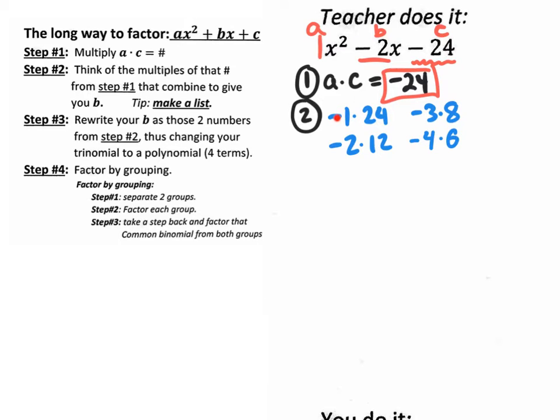Let's see, if I combine negative 1 and 24, that gives me a 23. Obviously, the b value is not 23. Negative 2 plus 12 is 10. That's obviously not 10. Negative 3 plus 8 is 5. The b value is not 5. Negative 4 plus 6, what's negative 4 plus 6? 2. Negative 4 plus 6 is 2.